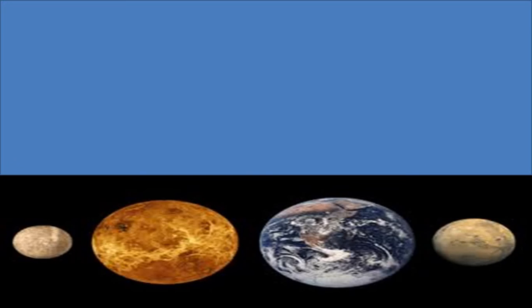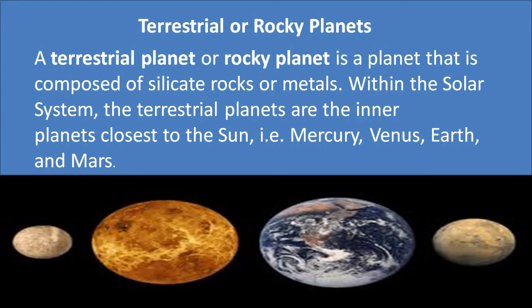These are the four terrestrial or rocky planets, which are the closest planets to the sun. The terrestrial planet is also called a rocky planet and is composed of silicate rocks and metals. These terrestrial planets are also called inner planets because they are closest to the sun. In order of distance from the sun: Mercury, Venus, Earth, and Mars.